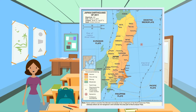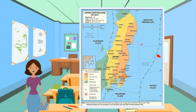On the 11th of March 2011, a 9.0 magnitude earthquake struck 70 kilometres from the coast of Sendai Bay, severely affecting the region of Tohoku and the city of Sendai. The earthquake was the most powerful recorded earthquake in Japan's history and was the costliest natural disaster in history.